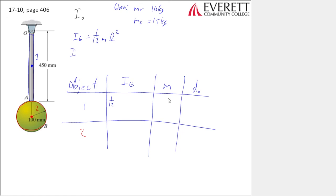So we'd say IG of the sphere is equal to 2/5 MR squared, and then we'd just plug those in. We've got 1/12, 10 kilograms, and the length is 0.45 meters. And then we have down here 2/5 times 15 kilograms times the radius, which is given as 0.1 meters.